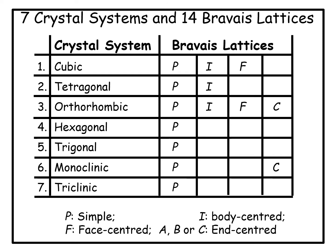The seven crystal systems are: cubic, tetragonal, orthorhombic, hexagonal, trigonal, monoclinic, and triclinic.